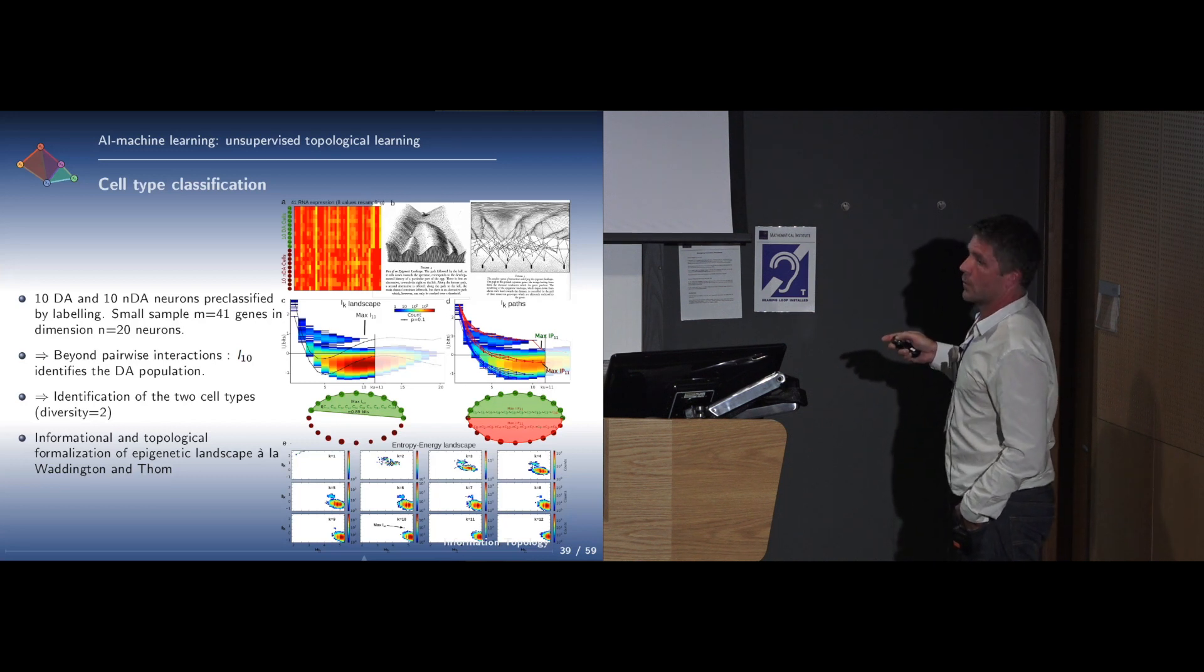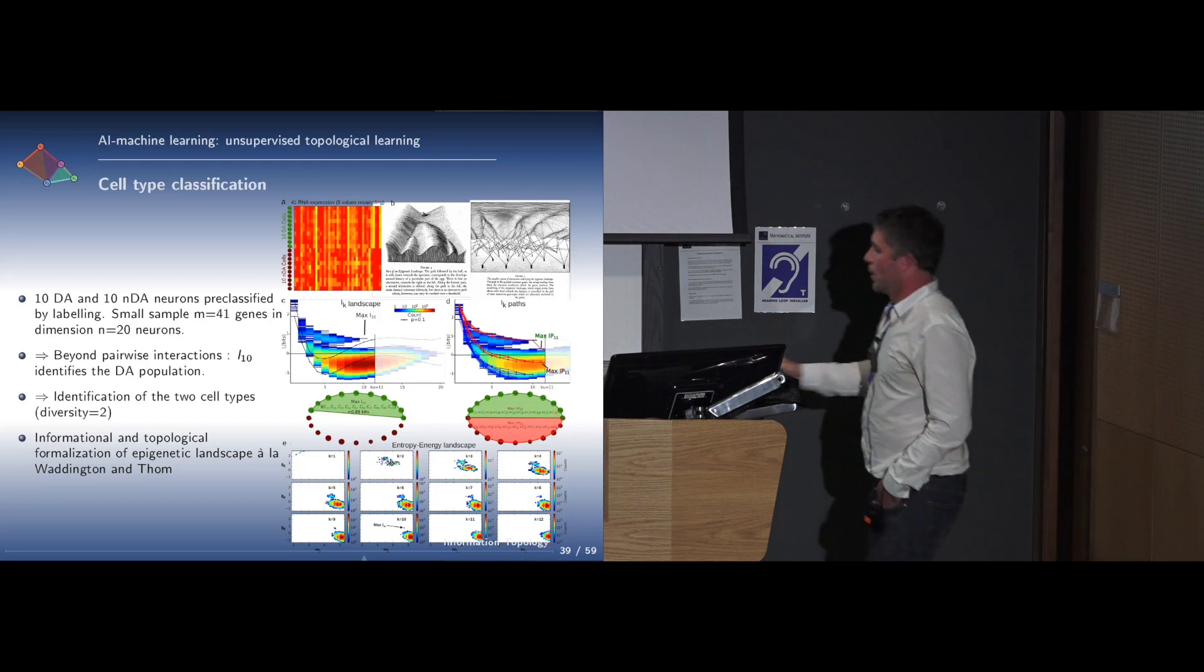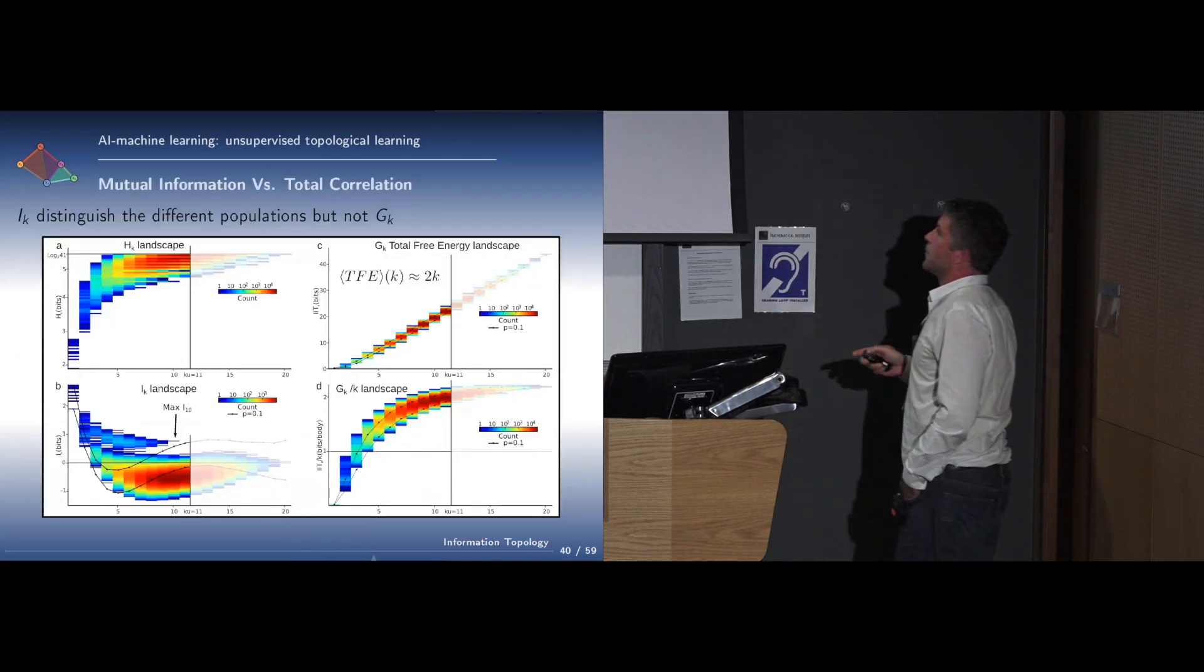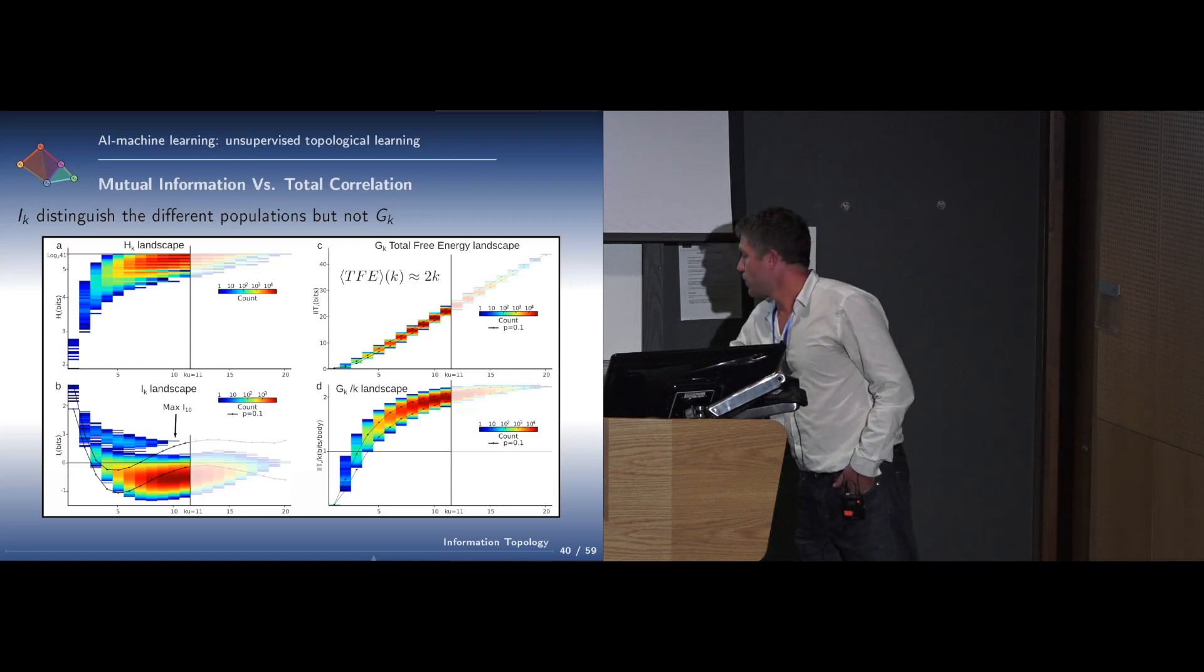When we compute, we can use this information landscape and compute this homology on data, here on genetic expression, and it allows to identify populations of neurons. There were 10 neurons of a certain kind which happened to have a large mutual information at 10, and the information path identifies the two populations that were present in the data. Unfortunately, when we compute the integrated information, the total energy, instead of the mutual information, it cannot distinguish anymore.